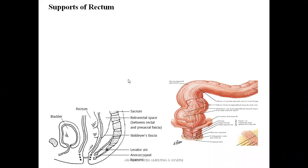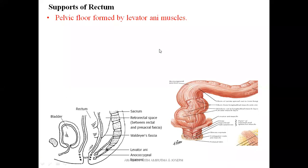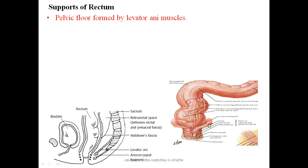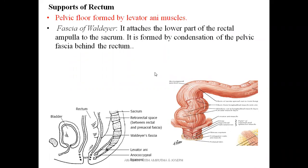What are the supports of the rectum? The pelvic floor is formed by the levator ani muscles. Levator ani muscles are the muscles which form the pelvic floor, as we have seen in detail in the pelvis class. These muscles give a lot of support — as we can see here, the levator ani muscles are supporting the rectum from below.